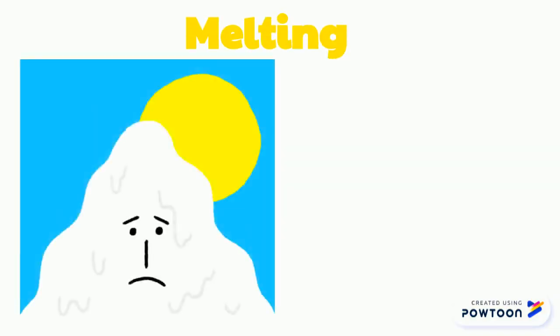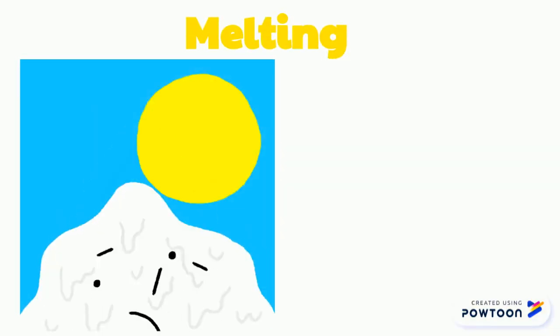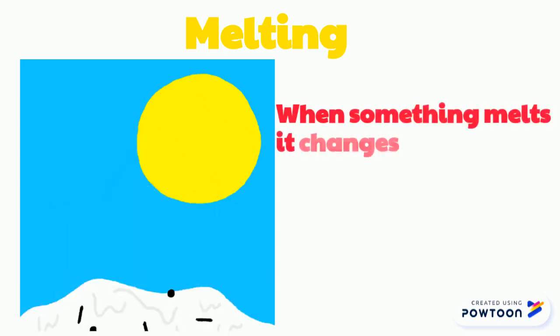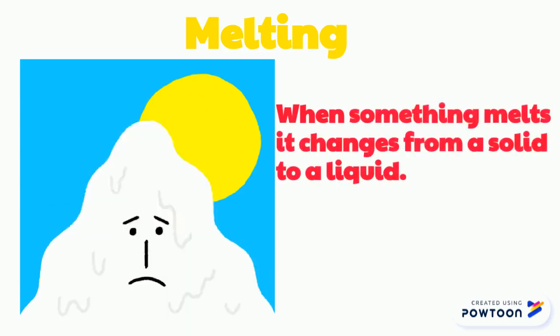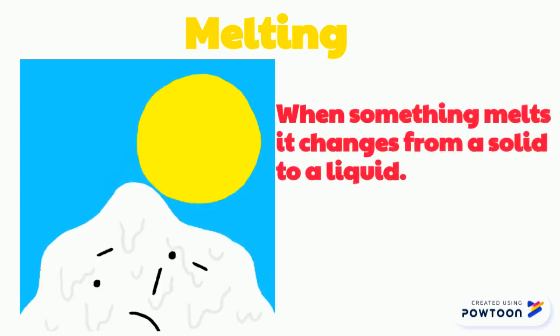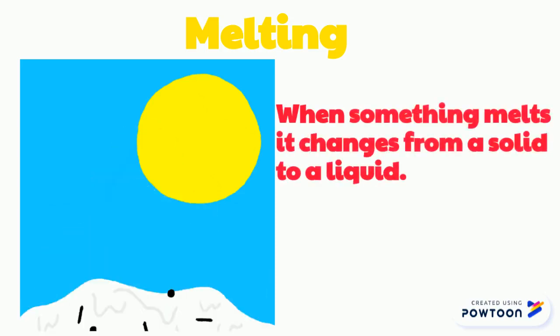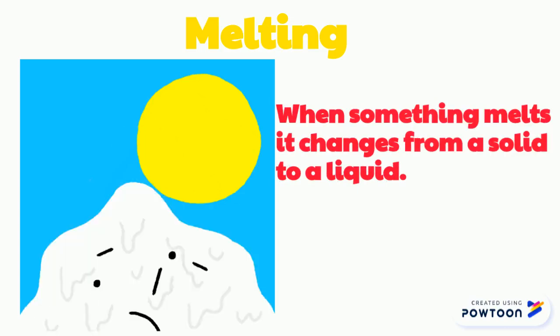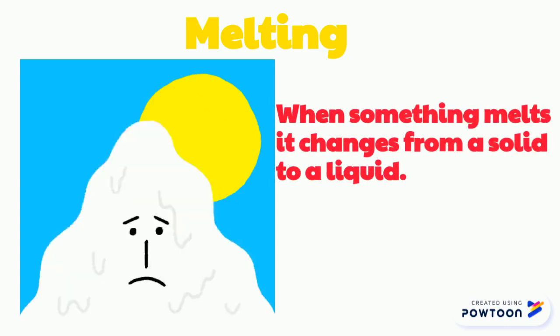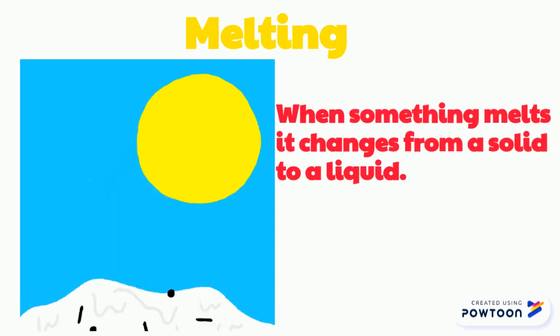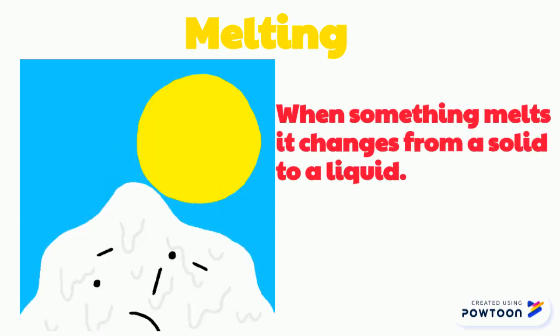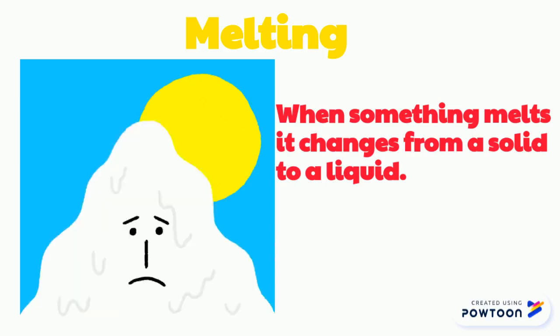Either by melting. When something melts, it changes from a solid to a liquid, such as the snowman. In the picture, the heat from the sun is melting the snowman and changing it from a solid to a liquid.